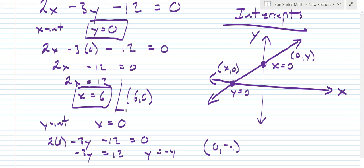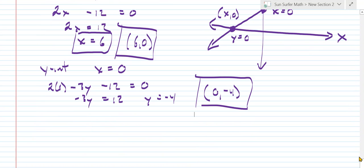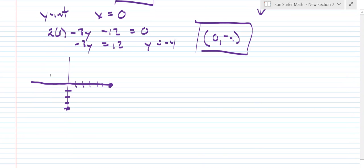Well, now that we have these two points, these intercepts, we can plot them. So 0, negative 4. Let's make a small graph here. 0, negative 4 is going to be down here. 1, 2, 3, 4. And 6, 0 would be 1, 2, 3, 4, 5, 6 right there and right there. And all we have to do to graph it is just draw a line